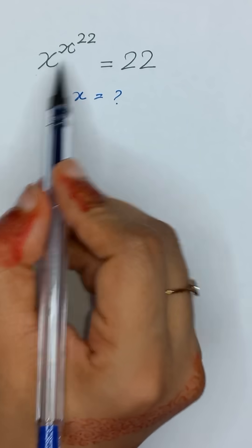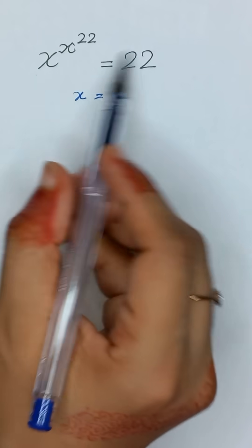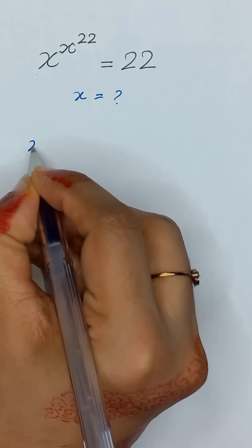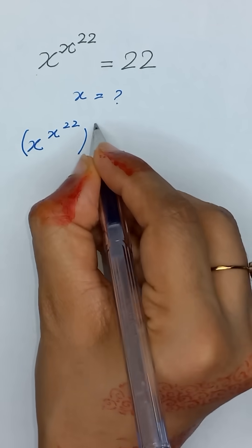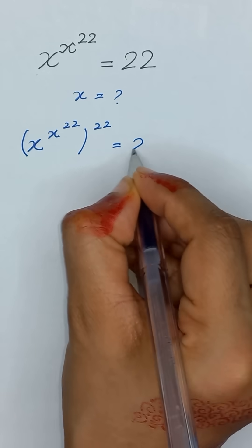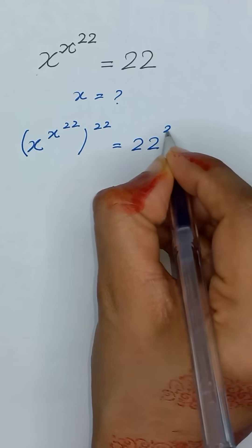First of all, we will apply power 22 on both sides. So it will become x to the power x to the power 22 and its power 22 is equal to 22 to the power 22.